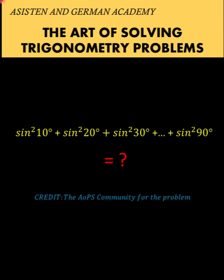Hi everyone, here is our math problem for today. We are given this trigonometric expression: sine squared of 10 degrees plus sine squared of 20 degrees plus sine squared of 30 degrees, continuing the pattern until plus sine squared of 90 degrees. We want to find the value of this expression. You can pause the video and see if you can solve this problem.